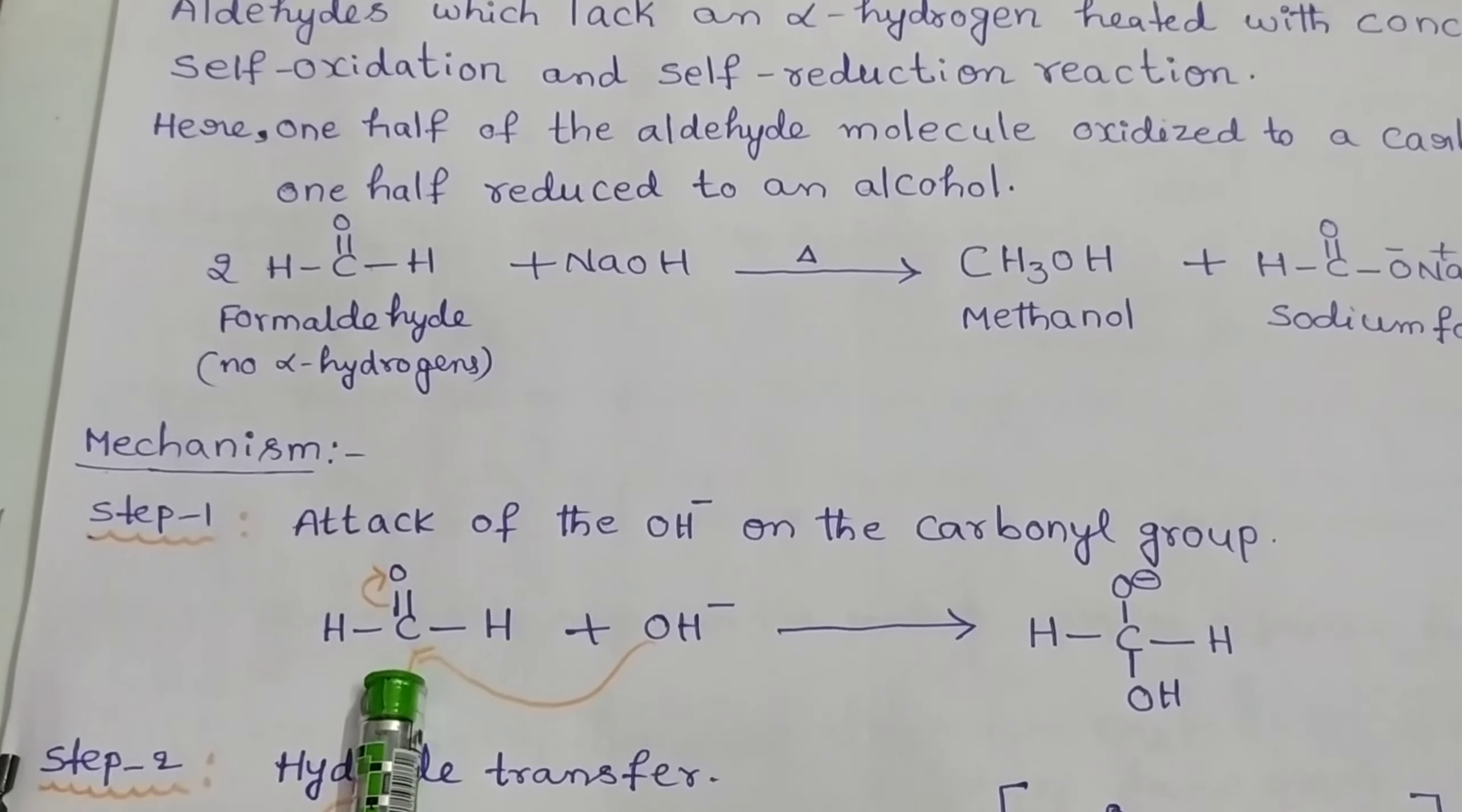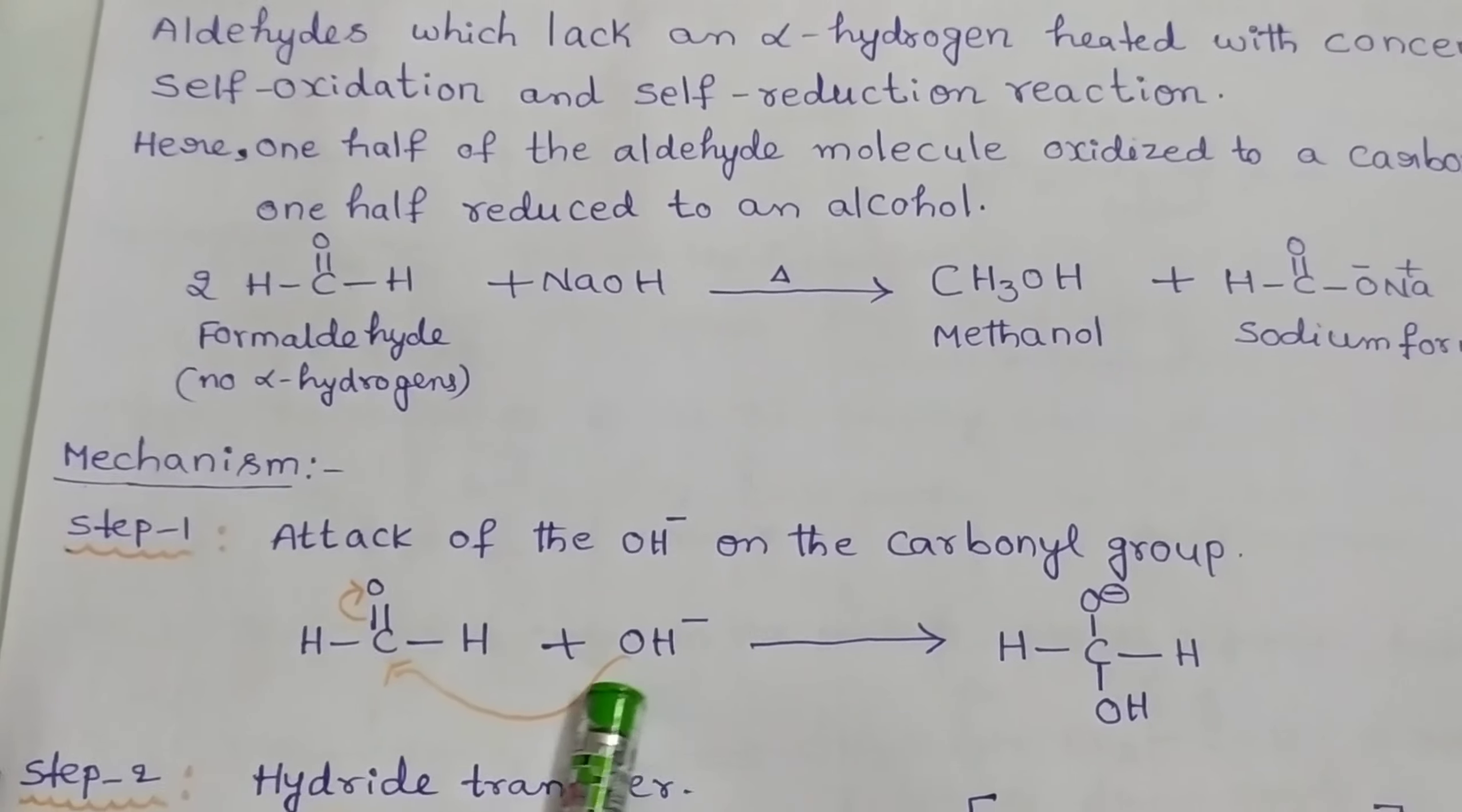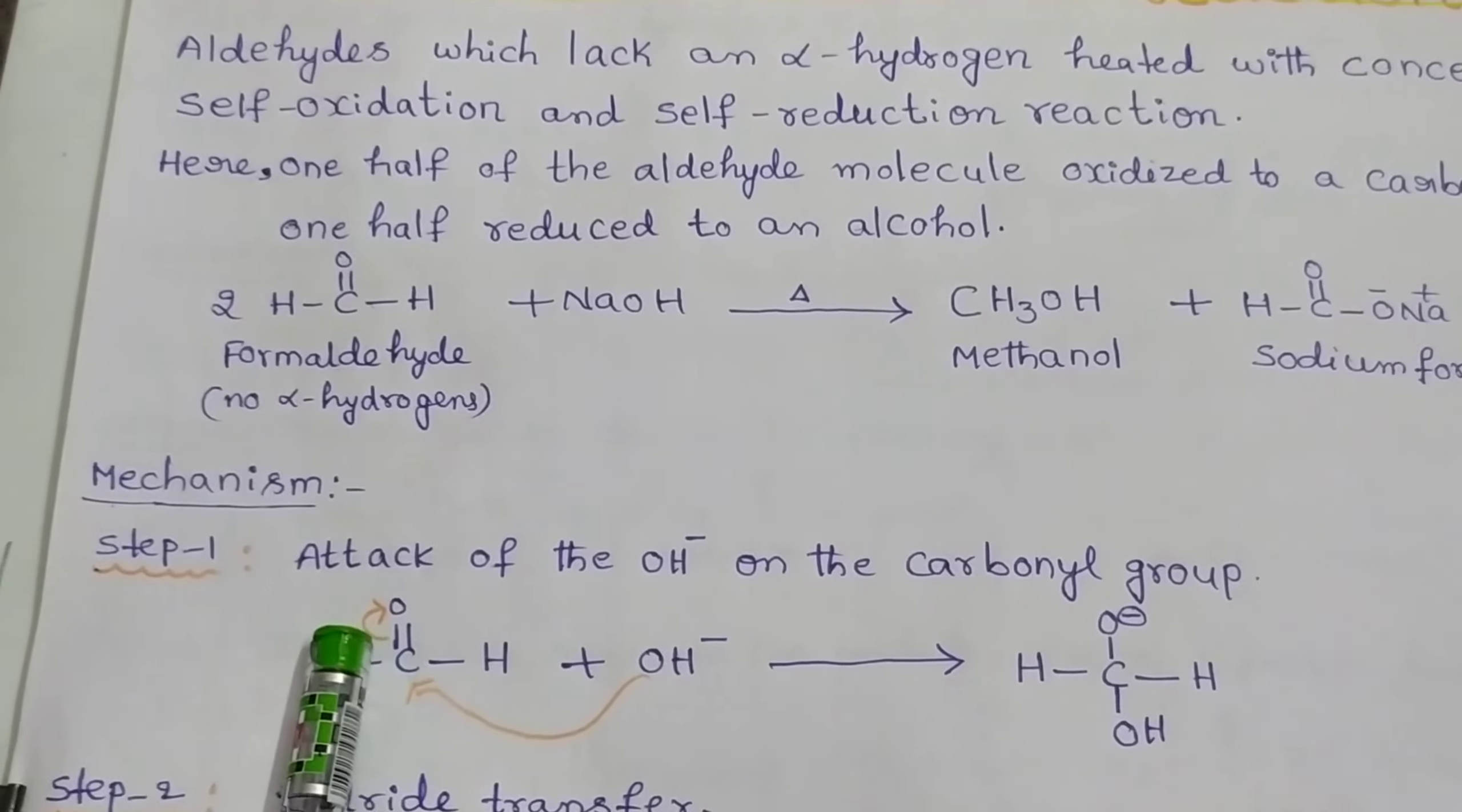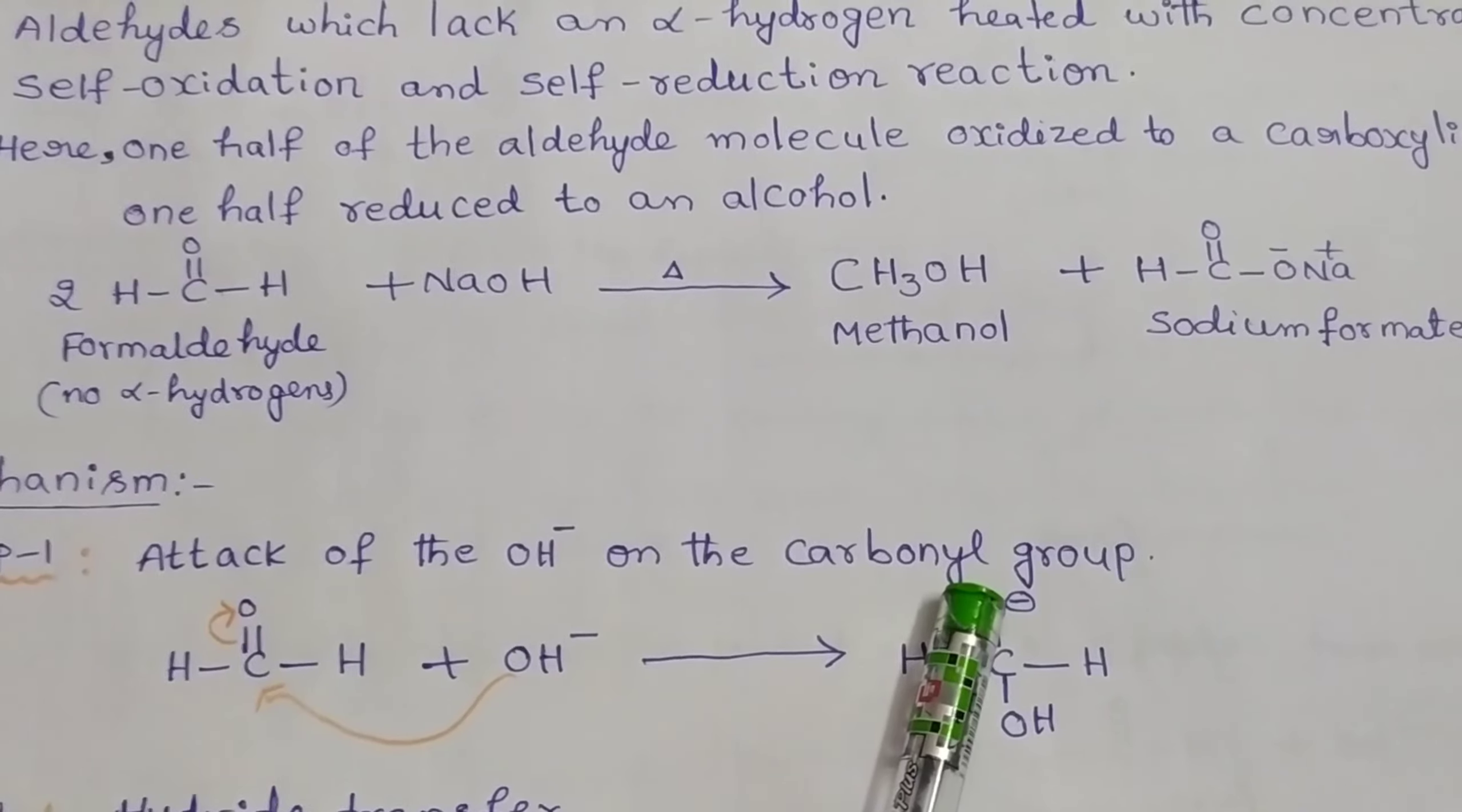For example, we can take formaldehyde. Here the OH minus group attacks the carbonyl functional group. The electrons shift to the oxygen atom and that will be converted as an O minus ion.